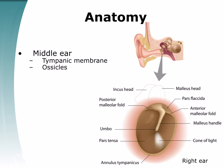The middle ear is an air-containing space which communicates with the nasopharynx via the eustachian tube. It is normally sealed laterally by the tympanic membrane. Its function is to transmit and amplify sound waves from the tympanic membrane to the stapes footplates, converting energy from an air medium to the fluid medium of the membranous labyrinth.